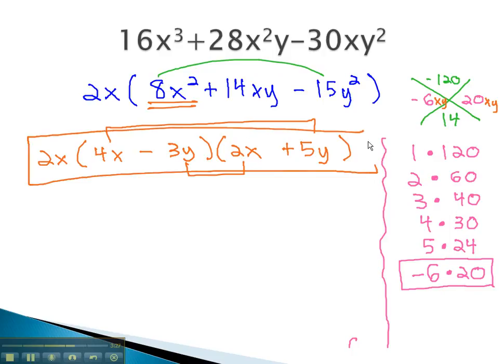2x times 4x minus 3y, times 2x plus 5y, will now factor our polynomial completely.